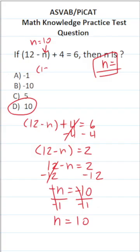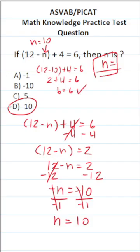This becomes 12 minus 10 plus 4 equals 6. 12 minus 10 is 2, so this is 2 plus 4 equals 6. 2 plus 4 is 6 — does 6 equal 6? It does. Therefore, I'm confident that D is the correct answer.